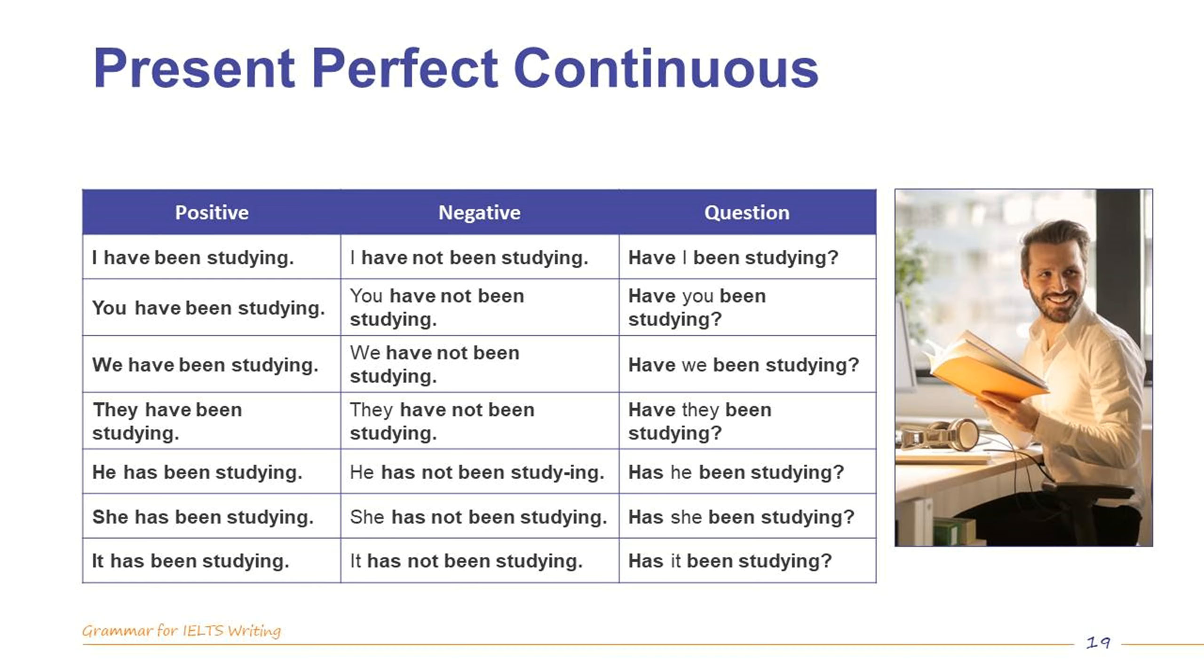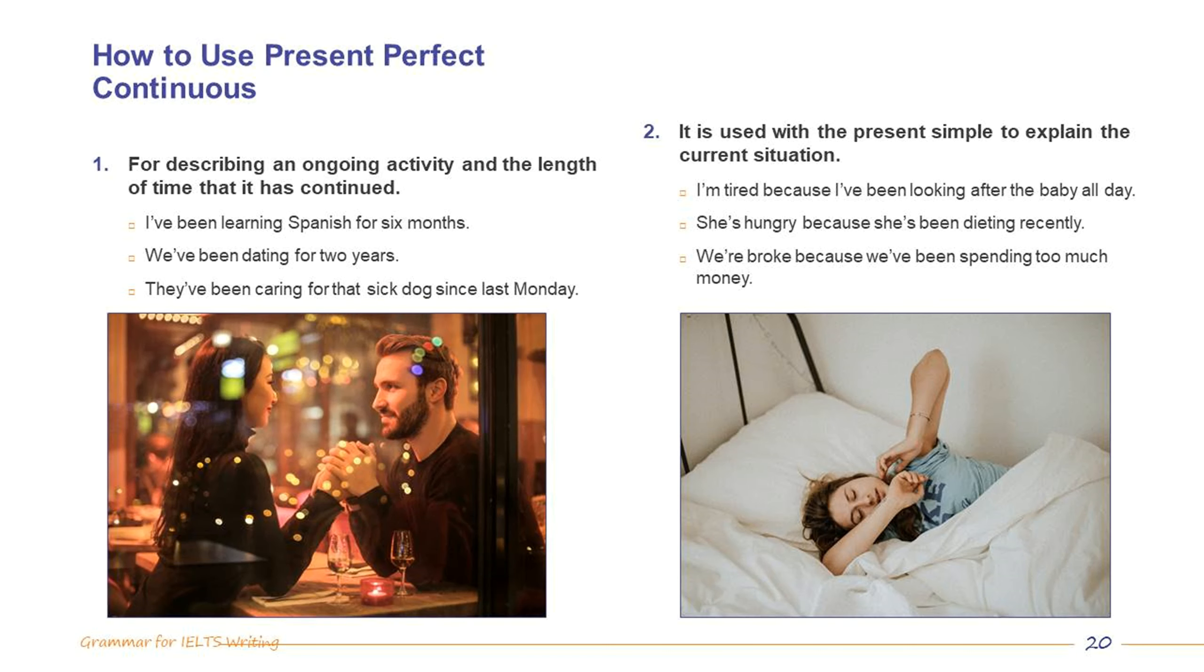As the name suggests, this tense includes elements of the perfect and continuous tenses. Namely, it includes both have or has and the past participle been, plus the verb plus ING. This tense is less common than the previous three and has a more specific application.